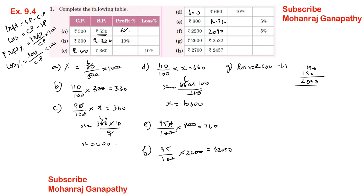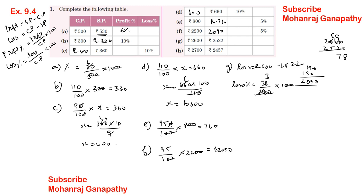For part (g), cost price is 2600 and selling price is 2522. Loss equals cost price minus selling price. The loss percentage calculation gives approximately 3.23%.